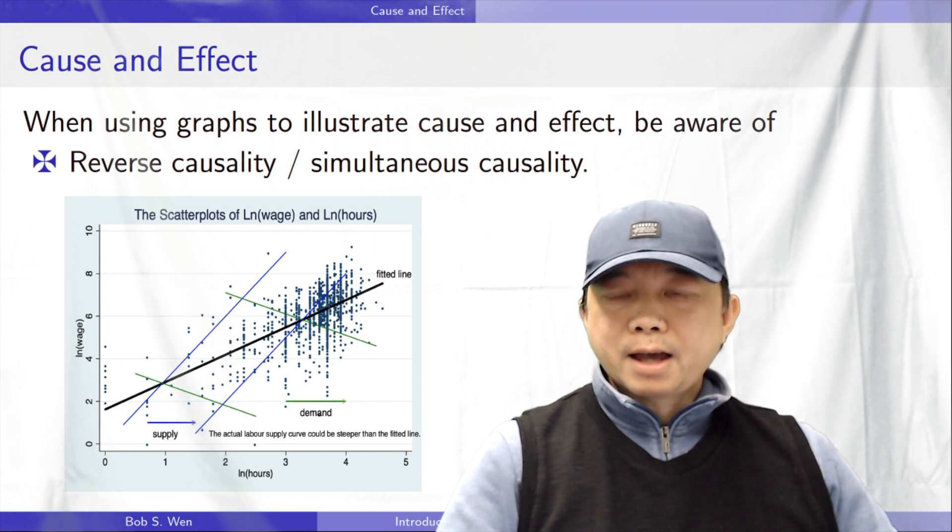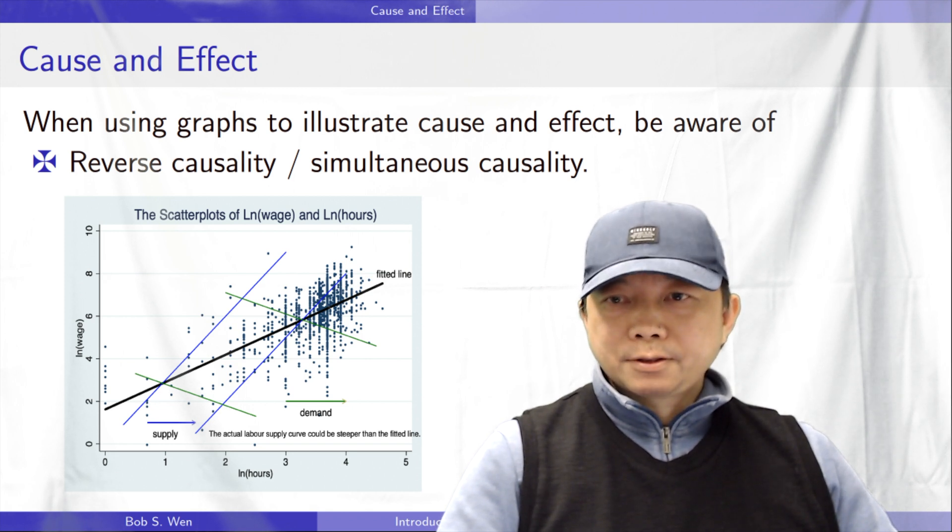Wages affect the hours of work supplied by workers. But the labour supply also affects the wage rates the firms would like to offer. We observe the labour market equilibrium.